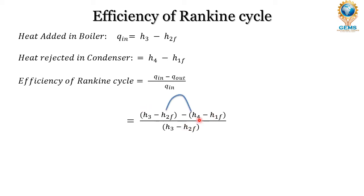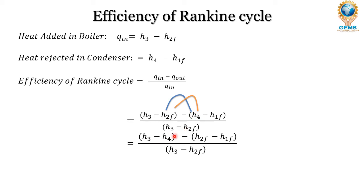We can rearrange the numerator: bring minus H2F here and bring H4 here. If we bring the minus H2F outside and then take it back inside, it becomes minus H2F. After rewriting, we get: H3 minus H4 minus (H2F minus H1F), divided by H3 minus H2F.